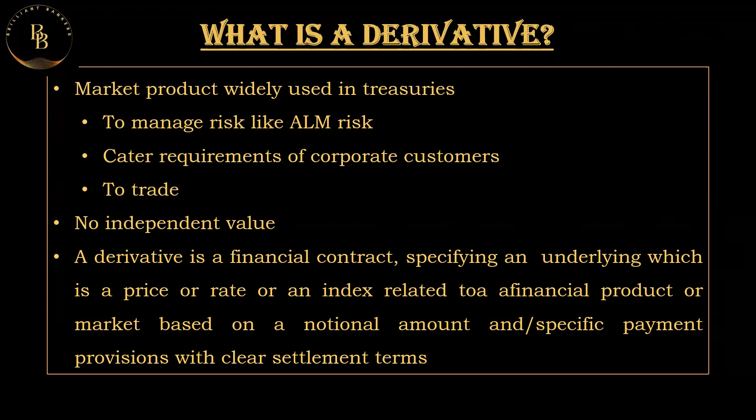Derivatives do not have a separate independent value. They are essentially contracts between two parties that derive their value from the performance of an underlying asset or index. To sum it up, a derivative is a financial contract specifying an underlying — a price, rate, or index — related to a financial product, based on a notional amount and specific payment provisions with clear settlement terms.